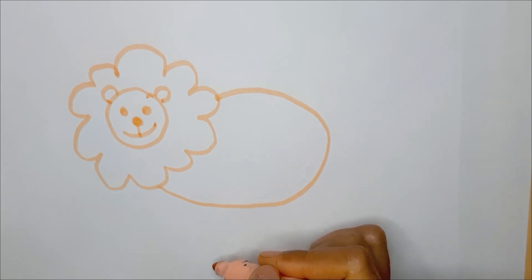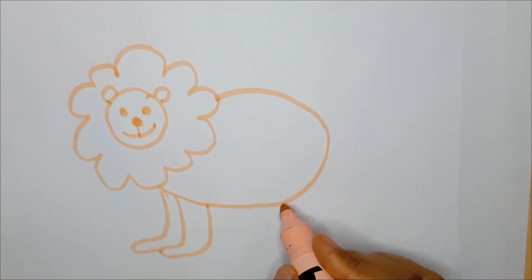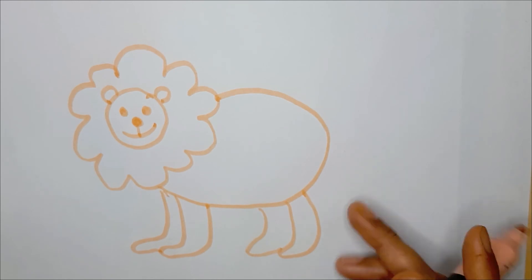How do we do that? How many legs do we have to draw? Four legs, right! So let's get started: one leg, two legs behind this one, three legs, four legs. Done! Now what is missing?